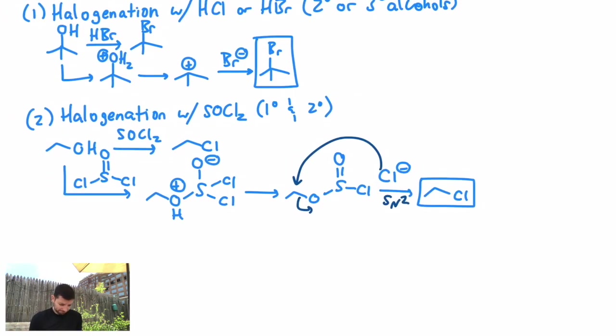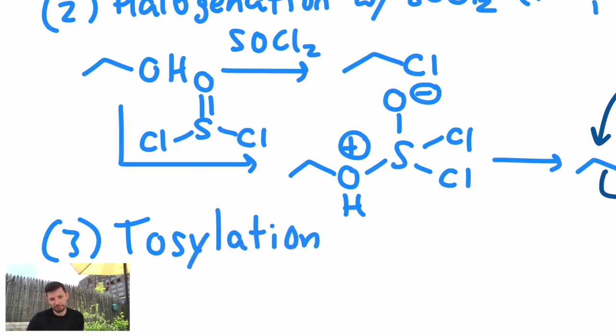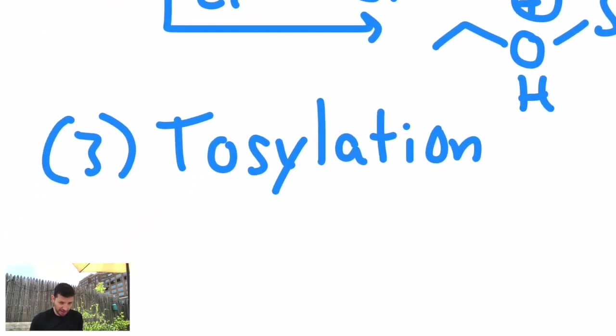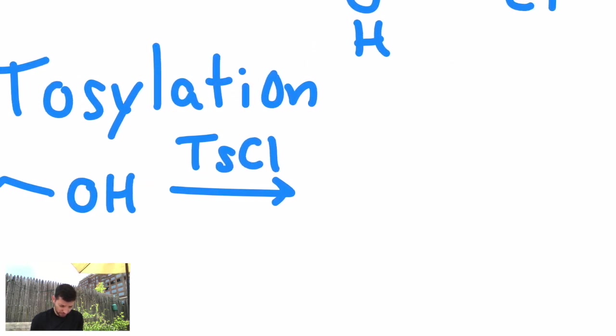There's one other, and it is a tosylation. There's one other, and this is more generic. We could do this on just about any alcohol. Tosylation is how you have an alcohol. I'll use a primary alcohol. Treat it with what's called tosyl chloride, and you turn it into a sulfonate, which is abbreviated OTs.